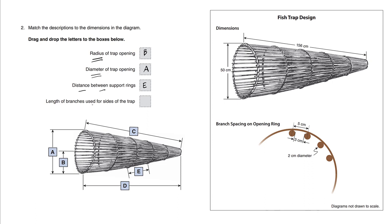Length of branches used for sides of the trap. The side of the trap is here. It's C. D looks very similar, but it's a bit too long. It's going away from the trap, whereas C accurately follows the trap. This is the proper length.